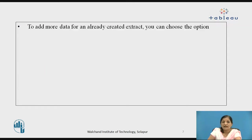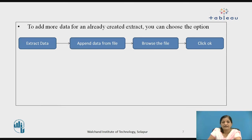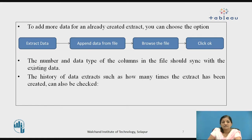To add more data to an already created extract, you can choose the options extract data, then append the data from the file, browse the file, and then click OK. This means you are choosing the file from which you want to add data to the extract. Before doing this, you need to check whether the number and data type of the columns in the file syncs with the existing data in the extract.